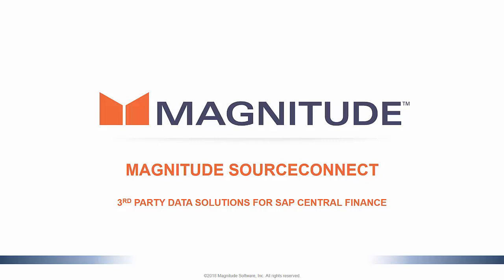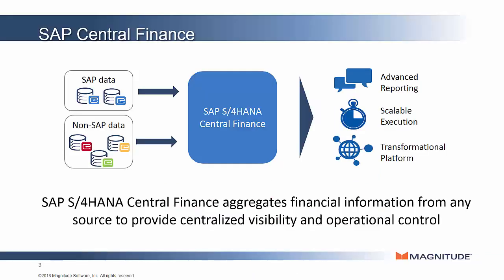This brief presentation is an overview of the Magnitude SourceConnect solution set, which is designed to be a complete solution to third-party data needs for SAP Central Finance. SAP Central Finance is designed to aggregate financial information from any source to provide centralized visibility and operational control for the finance organization. This enables advanced reporting, scalability in financial operations, and the opportunity to fundamentally transform finance within a company.